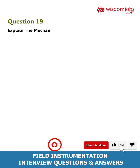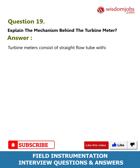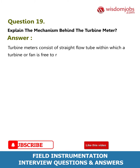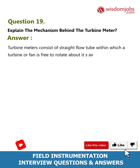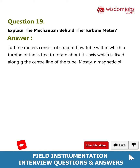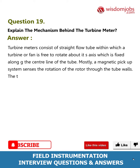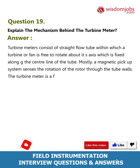Question 19: Explain the mechanism behind the turbine meter. Answer: Turbine meters consist of a straight flow tube within which a turbine or fan is free to rotate about its axis, which is fixed along the centerline of the tube. Mostly a magnetic pickup system senses the rotation of the rotor through the tube walls.